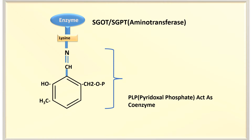SGOT means serum glutamate oxaloacetate transaminase, and SGPT means serum glutamate pyruvate transaminase. The coenzyme for this enzyme is PLP, which is pyridoxal phosphate.